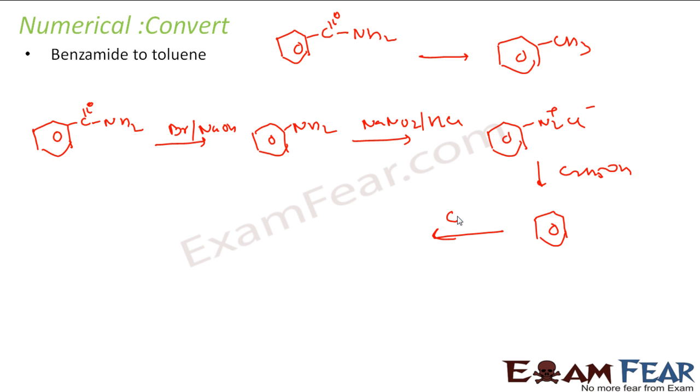Once I have benzene, I can react with CH3Cl in the presence of AlCl3. What will happen is, this will become AlCl4- and CH3+. CH3+ will attack the hydrogen and replace one of the hydrogen and you will get CH3 here. And this is the output. So benzene to toluene is pretty easy.